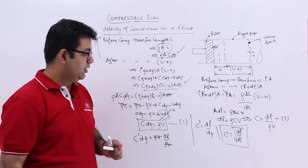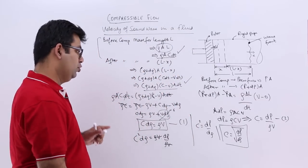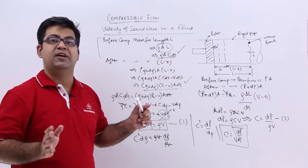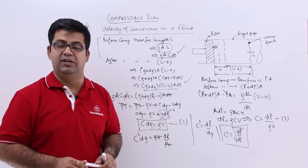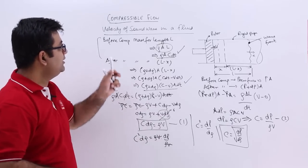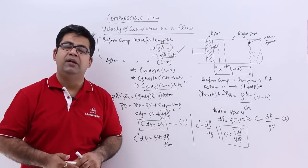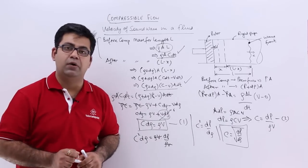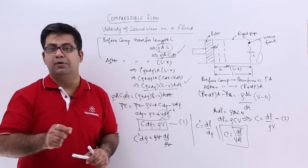So the velocity of sound is c equals the square root of dp over d rho. That is the expression we use to calculate the velocity of the sound wave in a compressible fluid. Next, we will find the velocity of sound in terms of the bulk modulus.